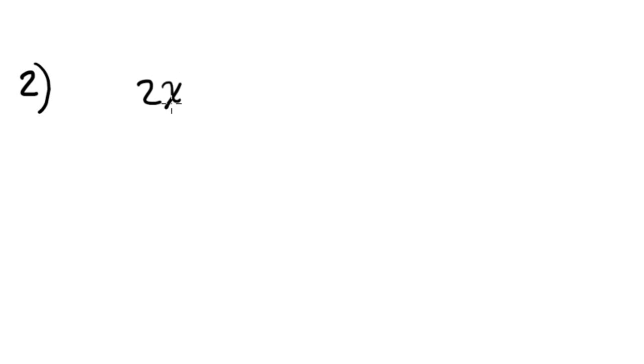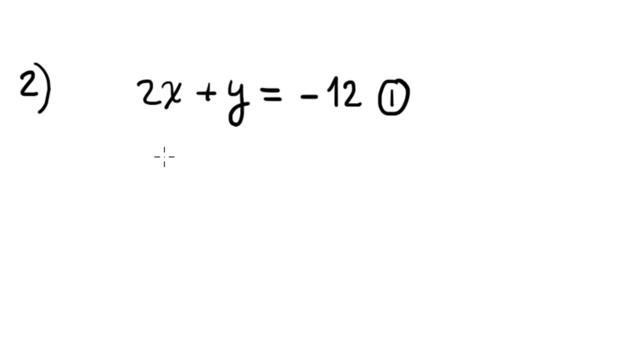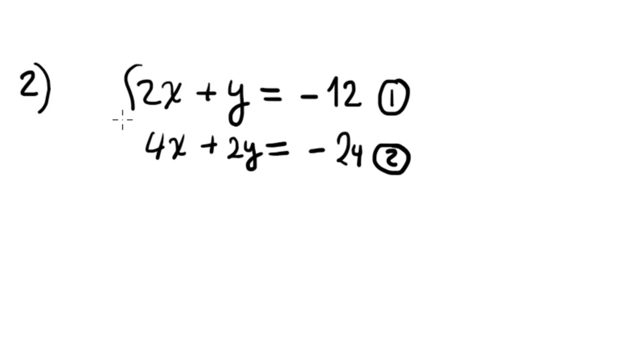The second question is similar — verify that the listed values are a solution of the system of equations. The system is 2x plus y equals negative 12, equation 1, and 4x plus 2y, equation 2. The potential solution is x equals negative 5 and y equals positive 2.